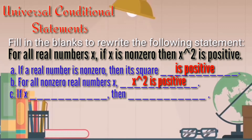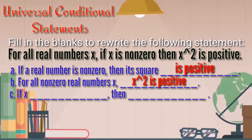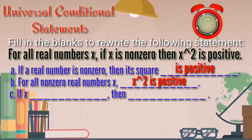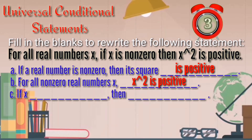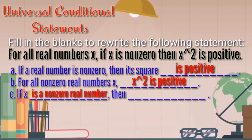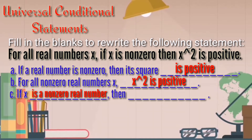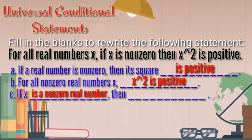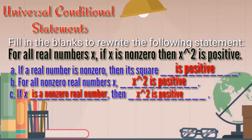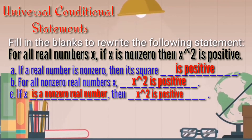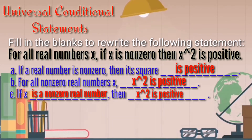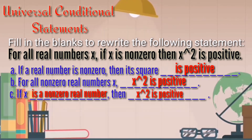Now the third statement: 'If x blank, then blank.' Obviously it is a conditional statement. The answer is: 'If x is a non-zero real number, then x squared is positive.' If you observe, however we rewrite the statement, it is still the same as the main statement — the thought is still there.